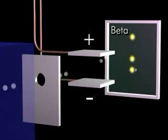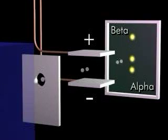A part of the beam is deflected downward, indicating that these particles are positively charged. These radioactive emissions are called alpha rays.